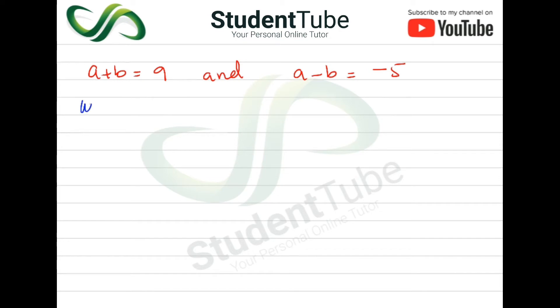Which formula will be using? A plus B whole square minus A minus B whole square is equal to 4AB.